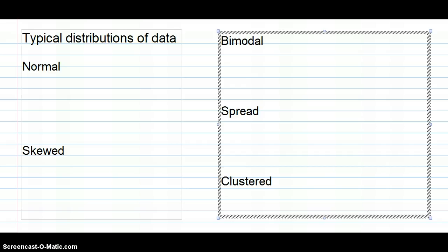Now, when we're looking at histograms and polygons, we find that there are several shapes or several types of polygons that tend to crop up again and again. Several distributions of data, we call them. Let's have a look at the most common ones. There's normal, skewed, bimodal, spread, and clustered. Let's look at an example of each.